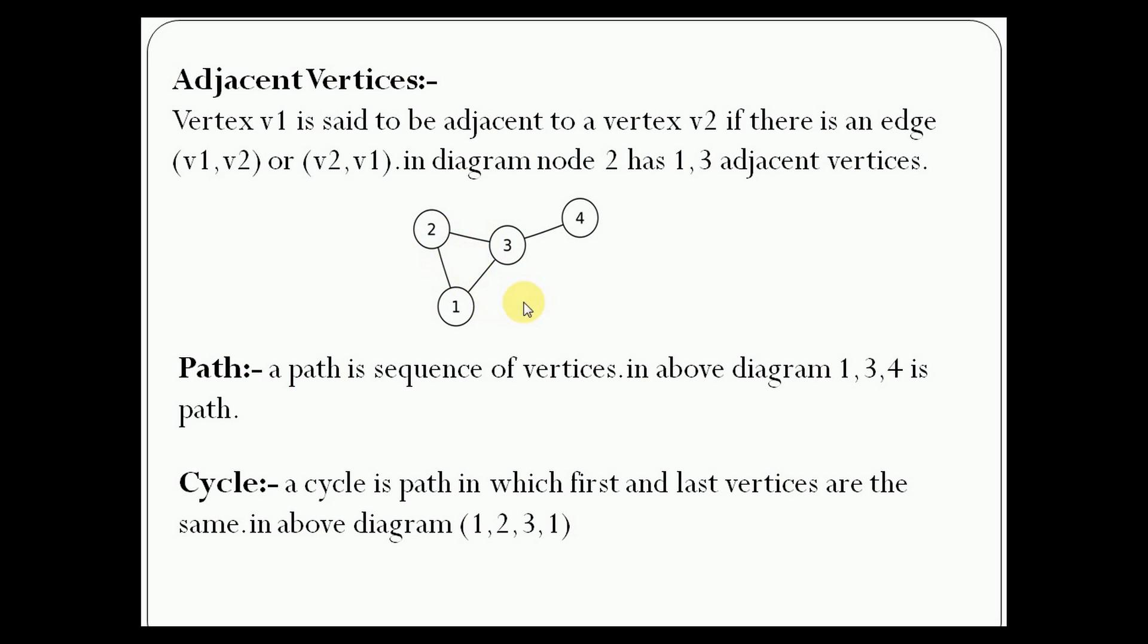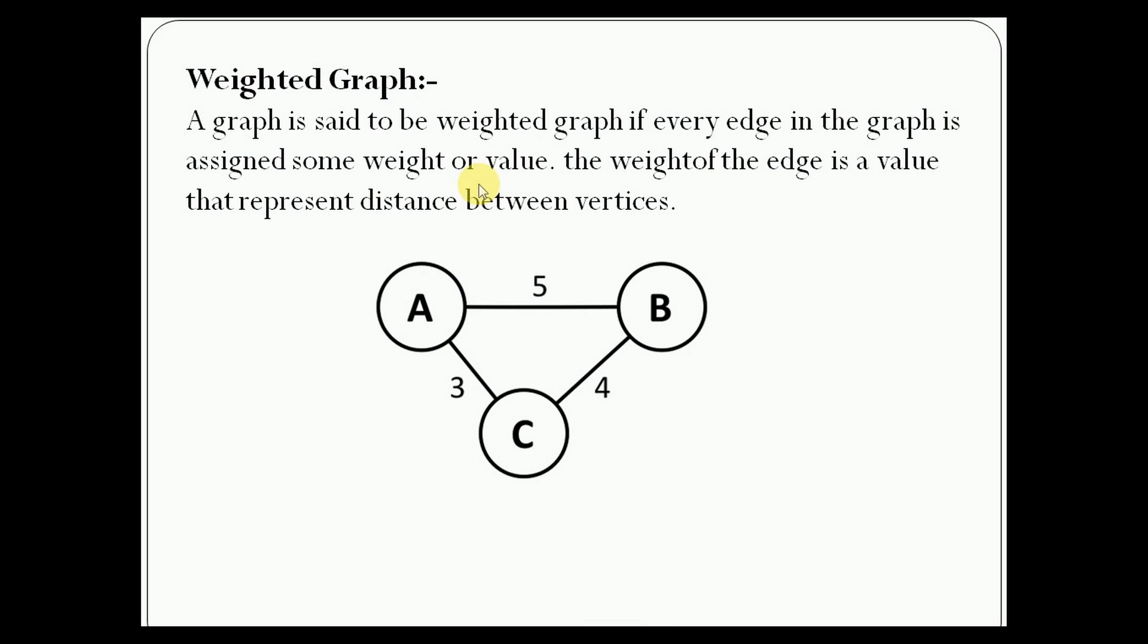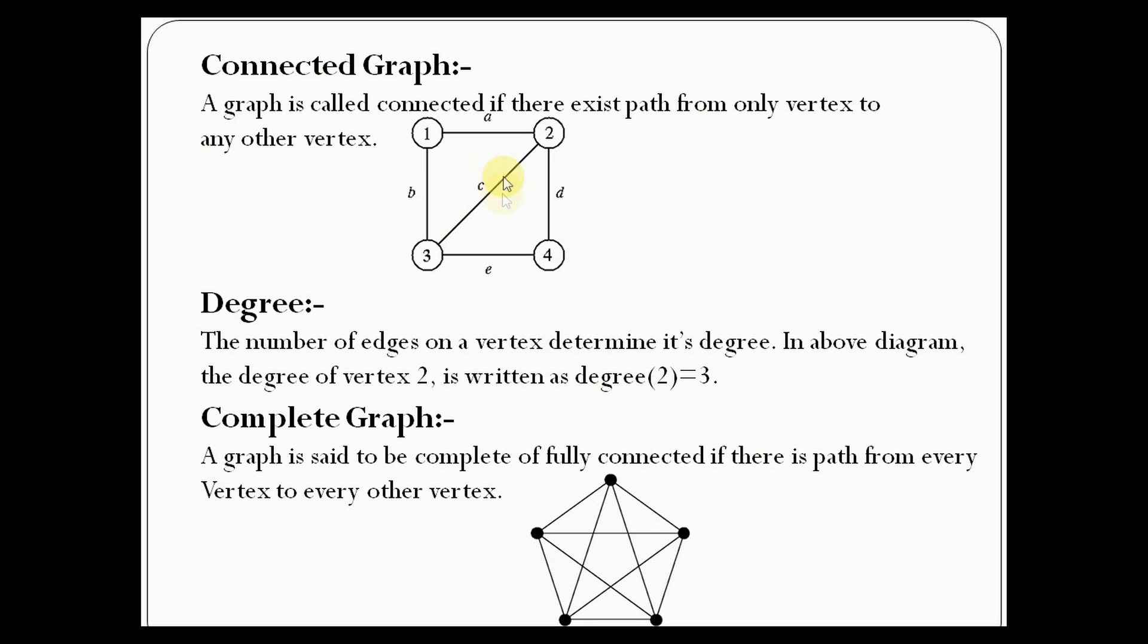A graph is called connected if there exists a path from any vertex to any other vertex. The diagram shows a connected graph where every vertex is connected to every other vertex.